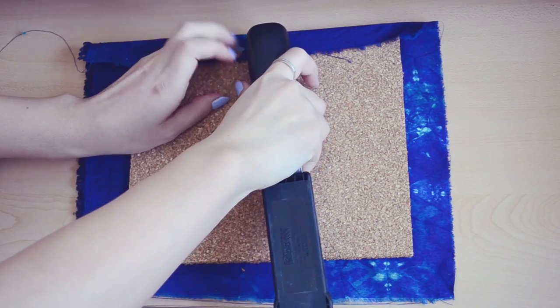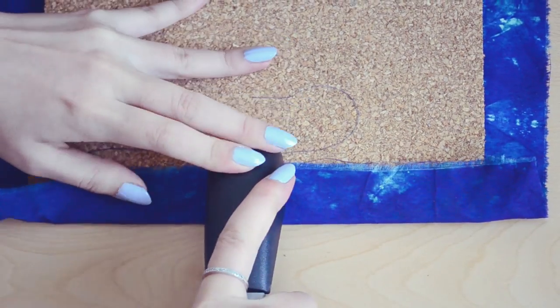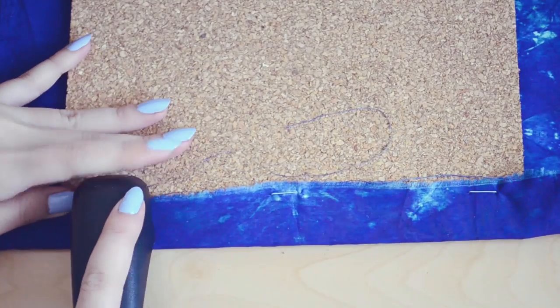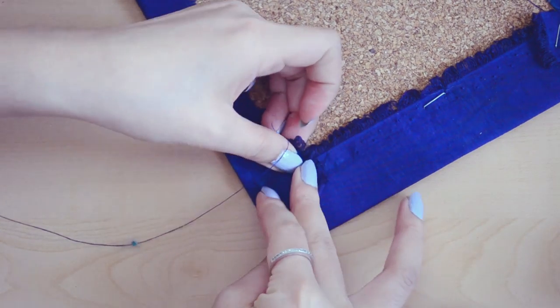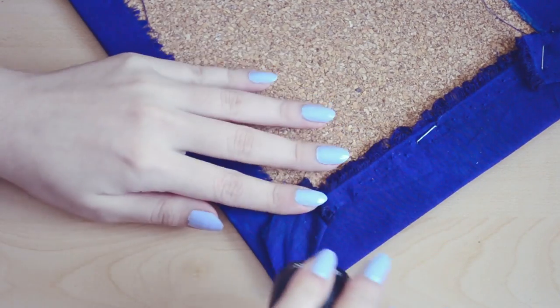Staple down one side of the fabric, and then stretch the fabric on the other side as tight as possible before you staple that down as well. To staple the corners, fold the fabric like so, and it doesn't hurt to put as many staples as you want, since it will be covered anyways.